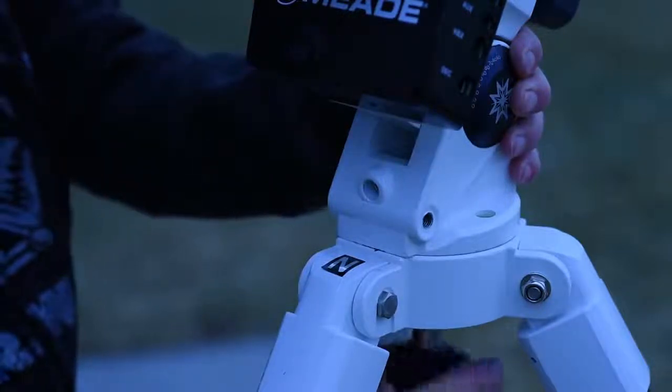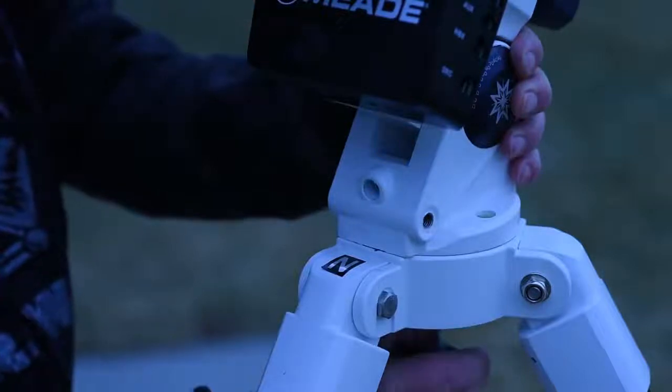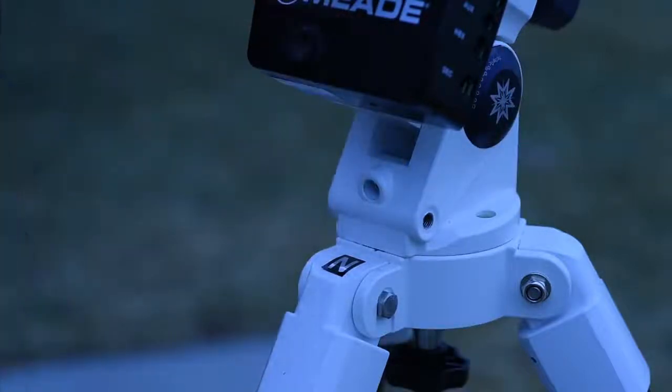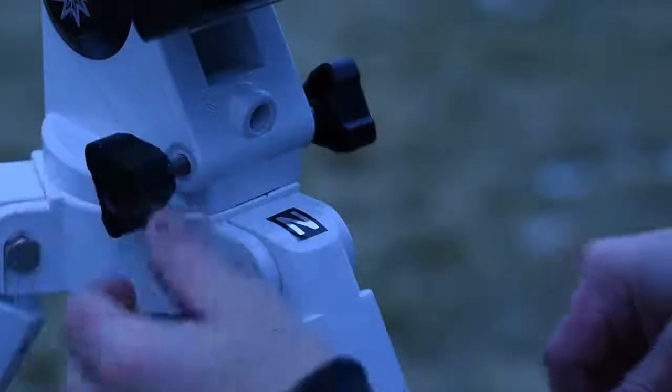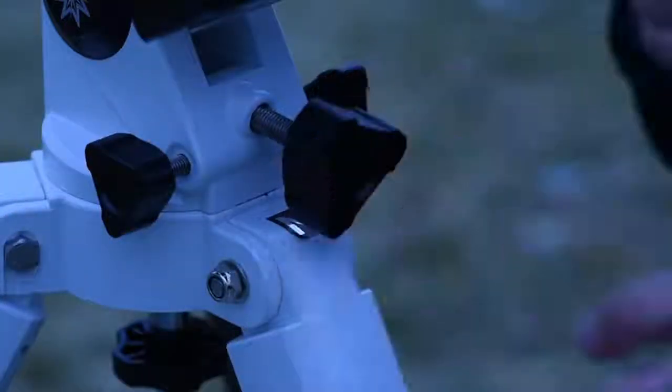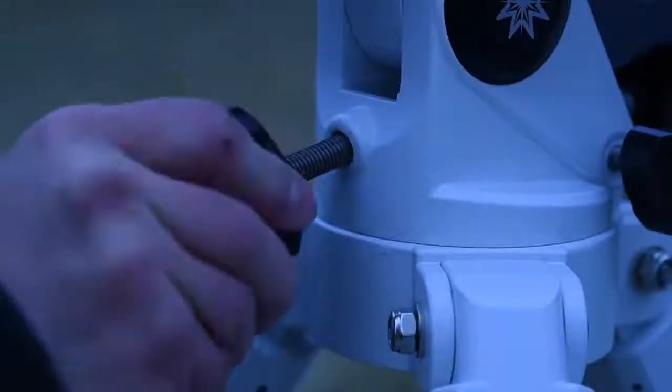While holding the mount onto the top of the tripod with one hand, secure the mount to the tripod by threading in the tripod's center rod and locking nut. Attach the two azimuth adjustment knobs to the mount. Attach the front altitude lock knob and the rear altitude adjustment knob.